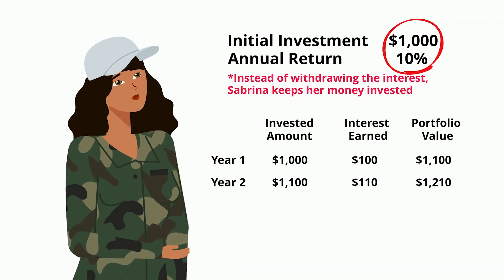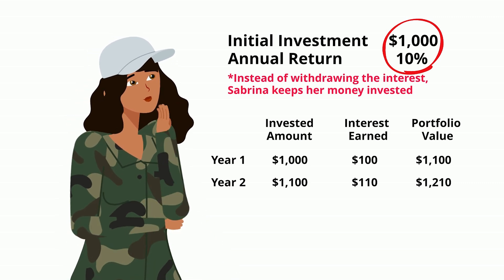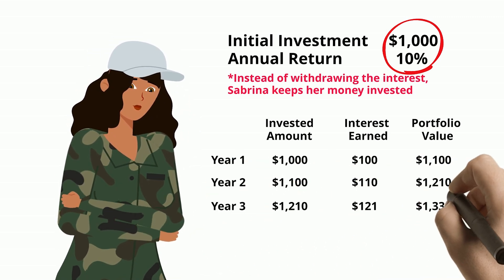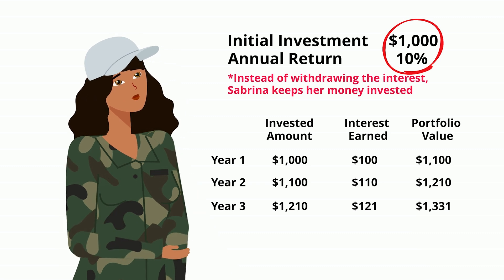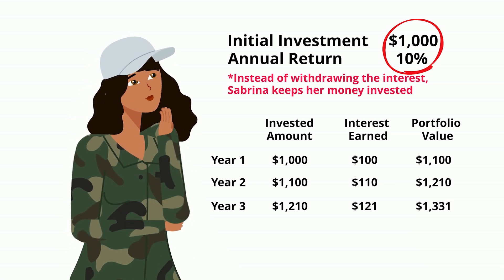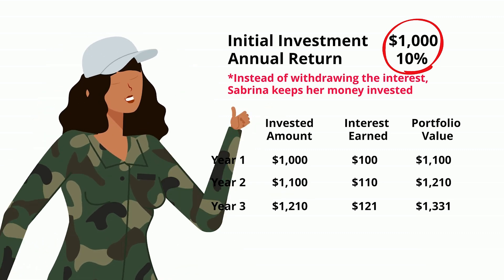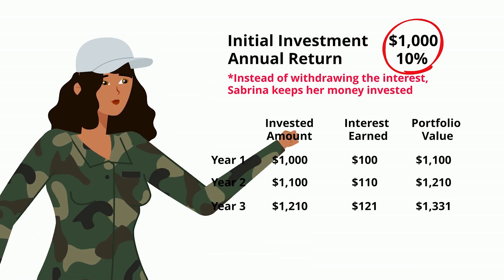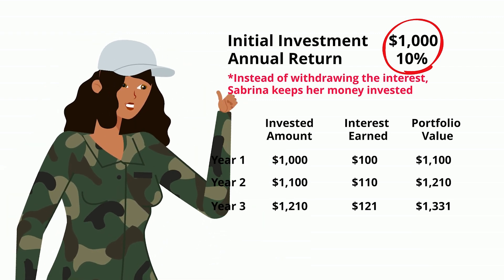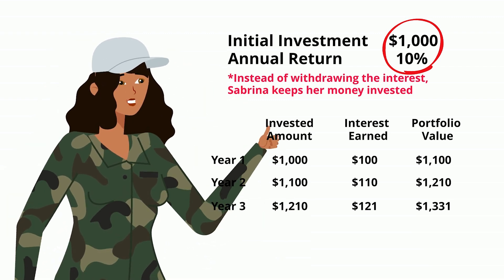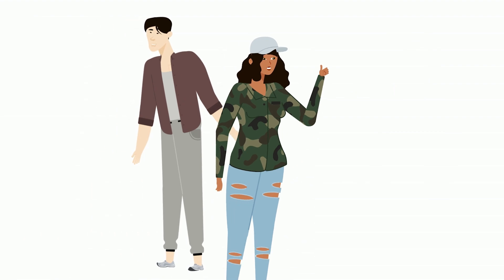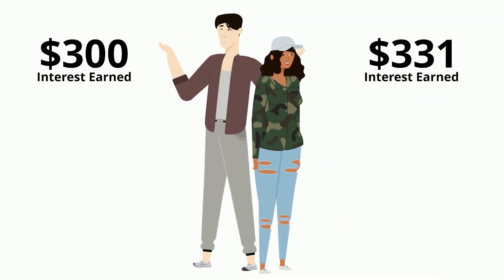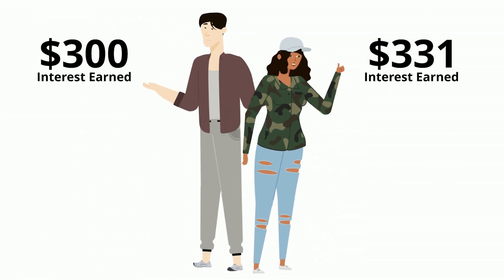This trend continues. After the third year, she earns interest on $1,210. So after three years, Sabrina's portfolio value reaches a total of $1,331. After three years, compound interest has earned Sabrina $31 more than Jason.